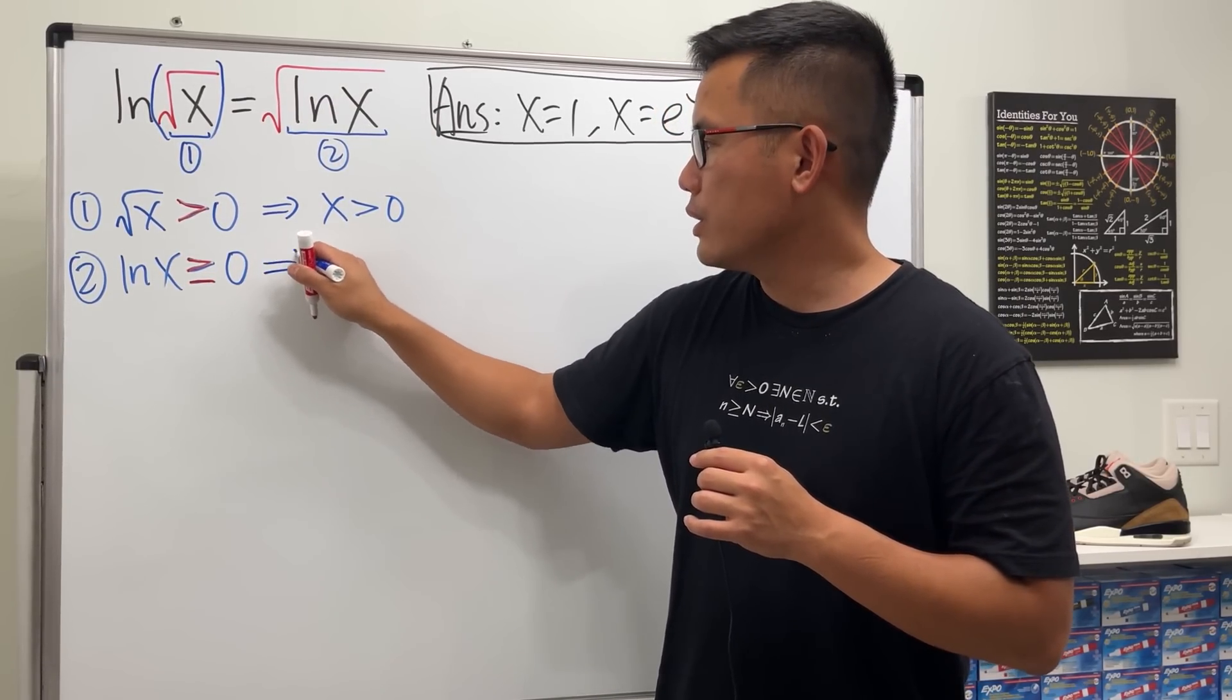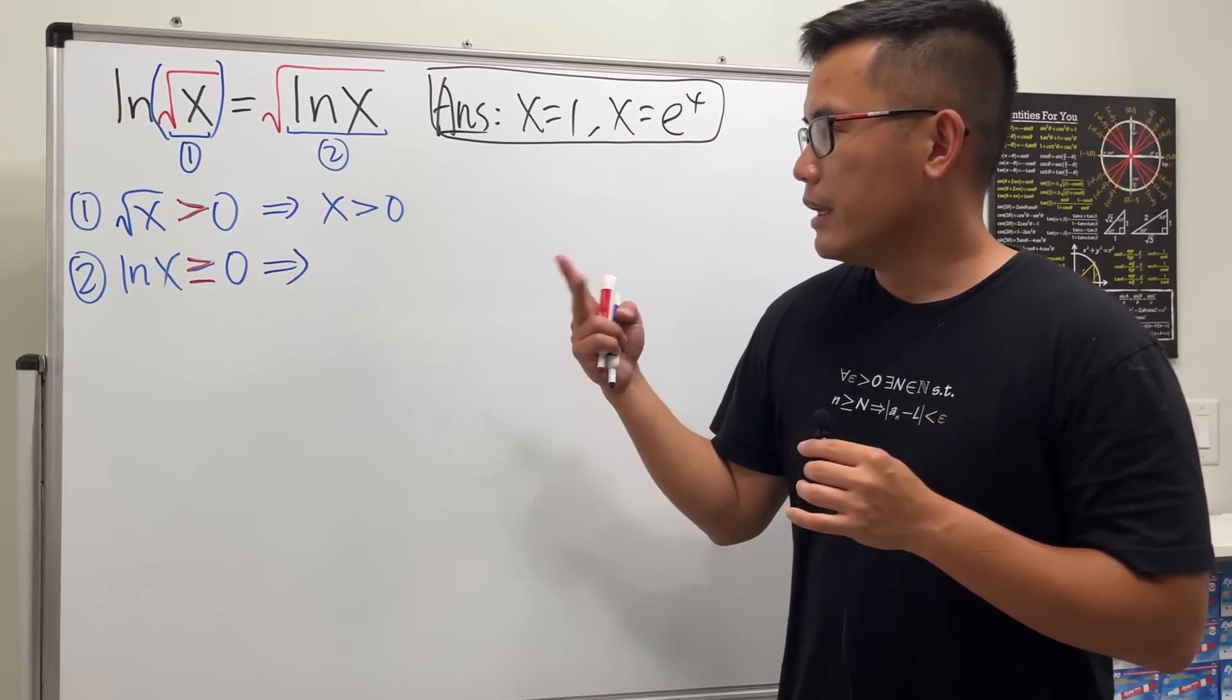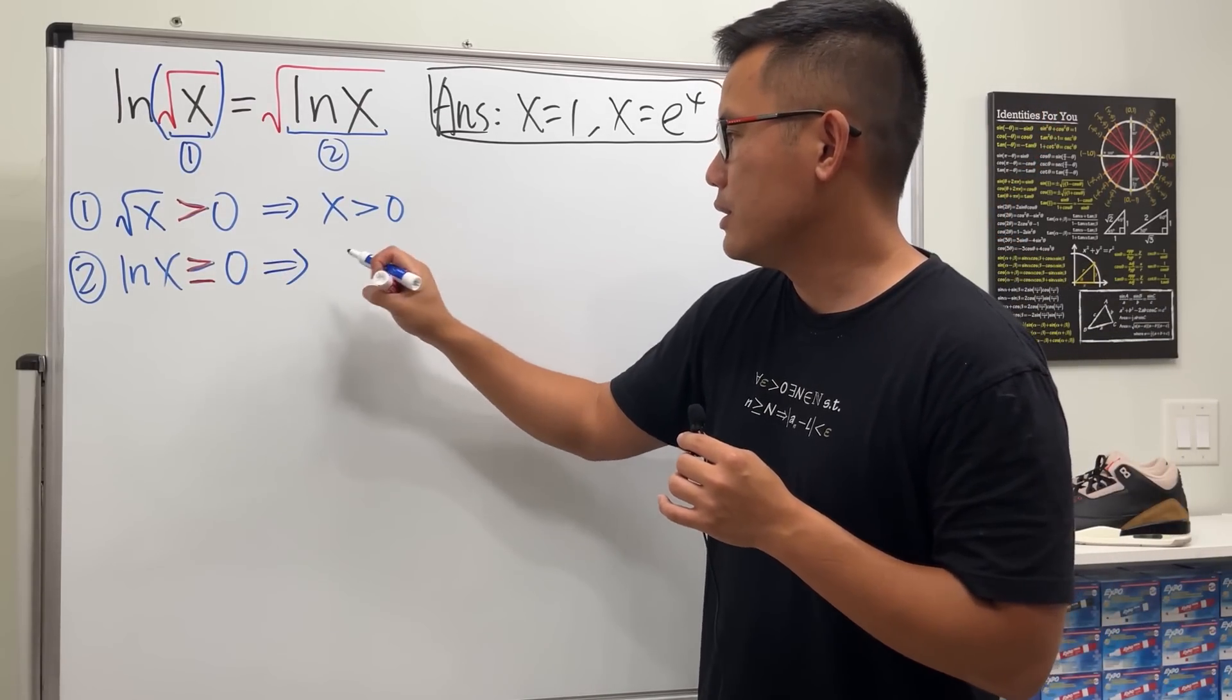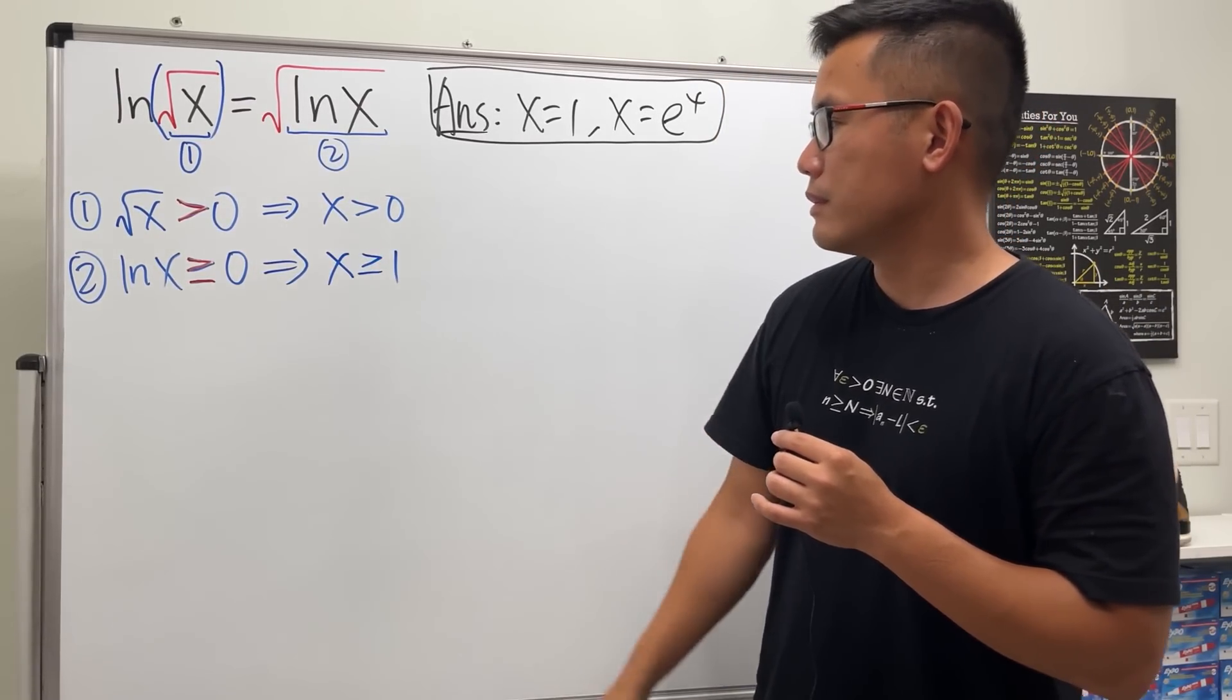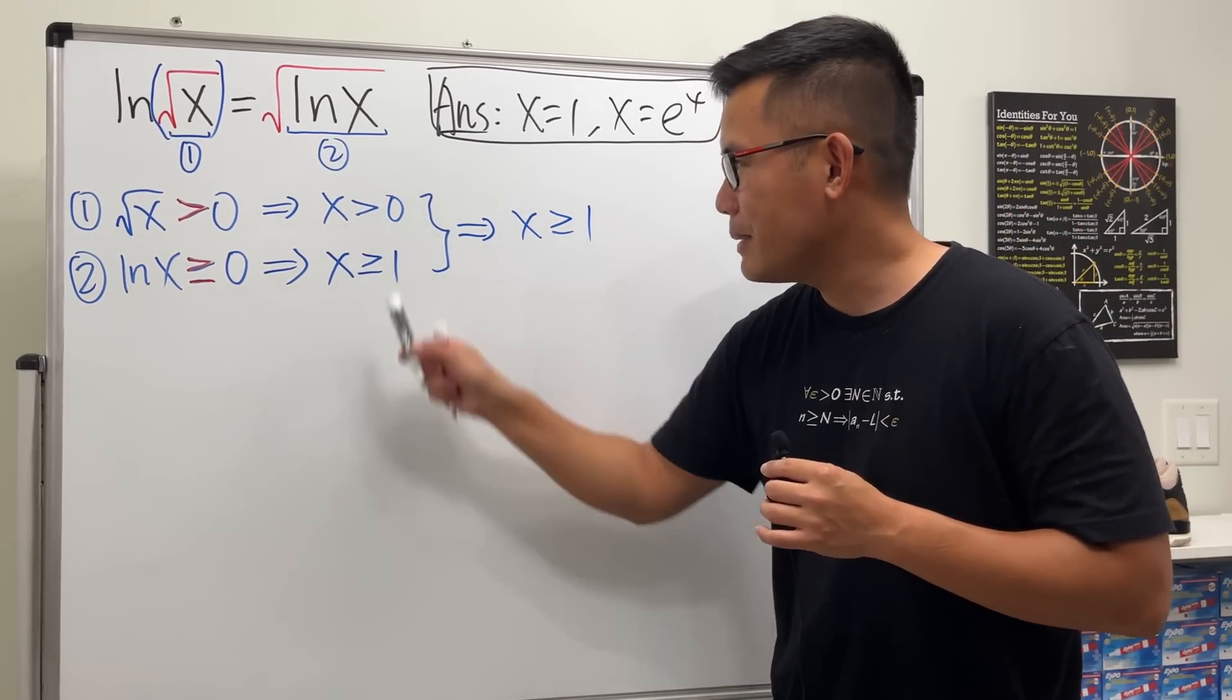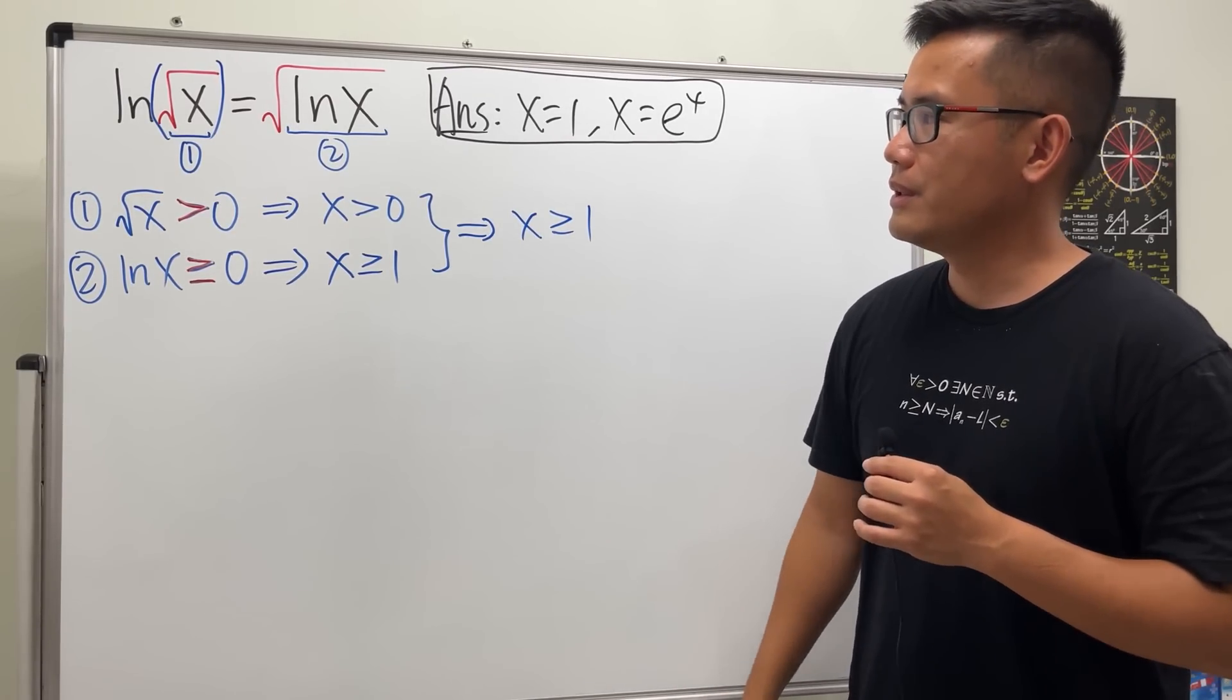And for this one, we can just do e to this power, e to this power, namely exponentiating both sides. And again, we can maintain the inequality, because exponentiating is just a one-to-one function. So anyway, this right here tells us x has to be greater than or equal to 1. Combine both conditions, we must have x is greater than or equal to 1. So keep that in mind, because we want this to happen, likewise, we also need that to happen. So anything less than 1, it's not allowed for our equation.